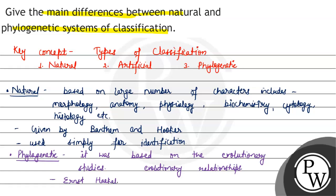Natural classification was simply used for identification, while phylogenetic classification was used for phylogenetic studies and understanding evolutionary complexity. I hope you have understood it well. Best of luck.